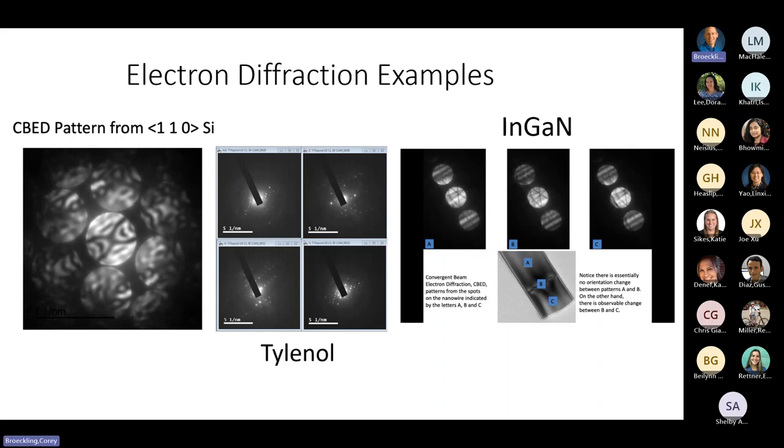On the right, we have gallium nitride. Here's again the NGAN and three convergent beam patterns from different locations, seeing how sensitive it is to the different orientations and the strain in the sample. So different diffraction techniques.